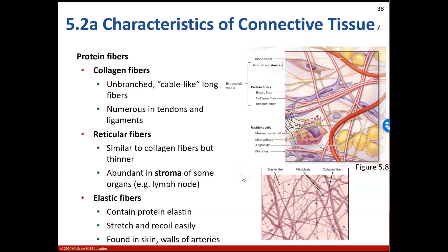The last fiber type are elastic fibers, represented by thin purple or brownish-purple lines in the illustrations and dark purple lines in the histology slide. They are created by a protein called elastin. These fibers are able to stretch and recoil easily, and we can find them in areas such as our skin and the walls of our arteries.